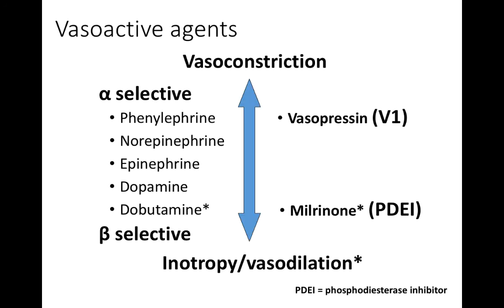That concludes our overview of the different vasoactive agents. A useful framework is to consider their hemodynamic effects: is it primarily vasoconstriction, or inotropy and vasodilation, or a combination? As we move into the discussion of shock, we'll see that different types of shock have different hemodynamic targets. Once you determine whether you need more vasoconstriction or more inotropy, the selection of agents based on their mechanism of action should make sense.